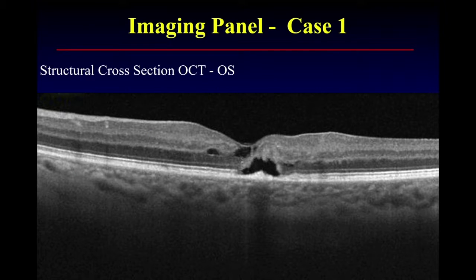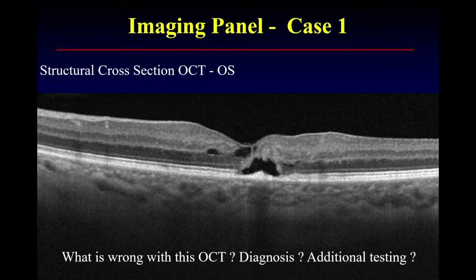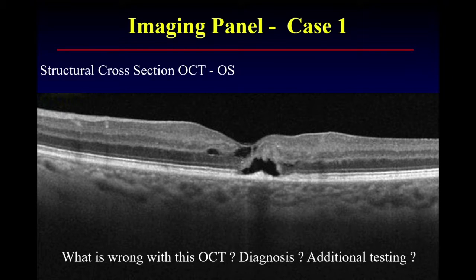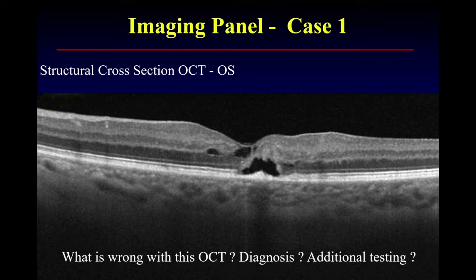Let's start with case one. Phil, why don't you kick us off? This is a structural cross-section OCT — what's wrong with this image? Elaine Galtrich just gave us a wonderful talk on various causes of cystic changes in the central macular region, and this case has some pathognomonic findings. One is that there's this draping of the internal limiting membrane over a central cavity, and there are some cystic changes in the mid-retinal region.